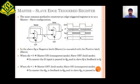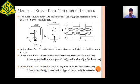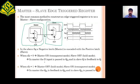Next we can move on to the multiplexer-based master-slave registers. As we can see, we are using both the positive and negative latch in order to create the master-slave edge-triggered register. The master is created by the negative latch and the slave is created by the positive latch. When clock is equal to zero, the master goes to on condition and the slave goes to off condition. When clock is equal to one, the master goes to off condition and the slave goes to on condition.